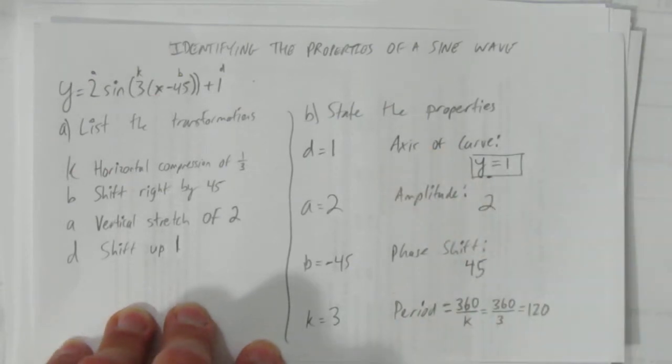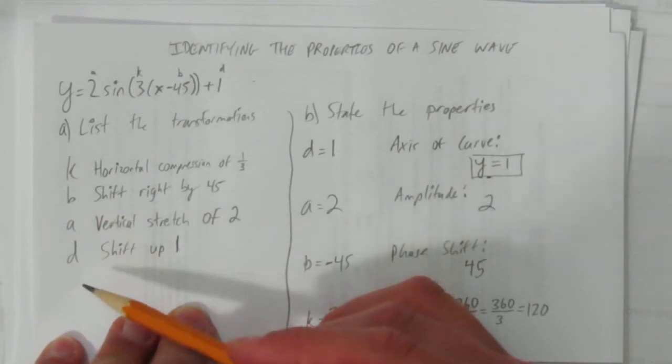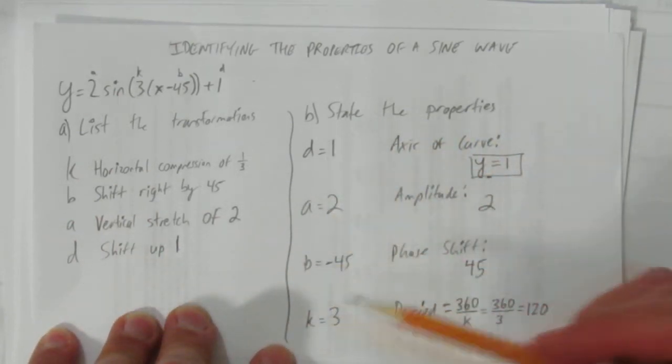We've identified the properties of a sine wave. We first listed the transformation in the correct order. And then we stated the properties based on the variables of the equation.